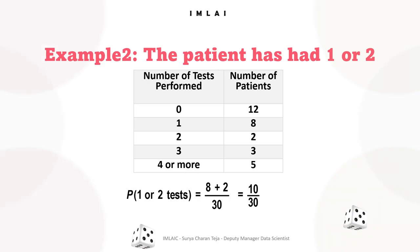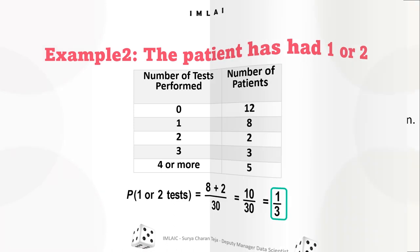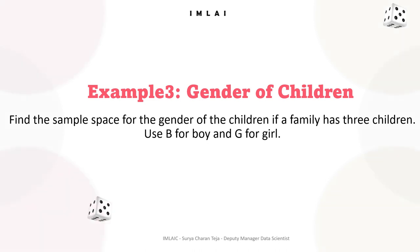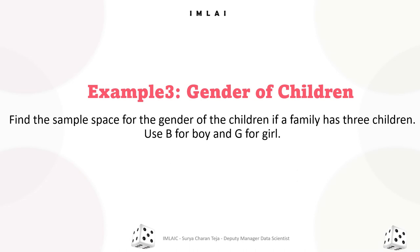Now let's look into one more example. This time it's going to be a little fun. Example three: gender of children. Find the sample space for the gender of the children if a family has three children.